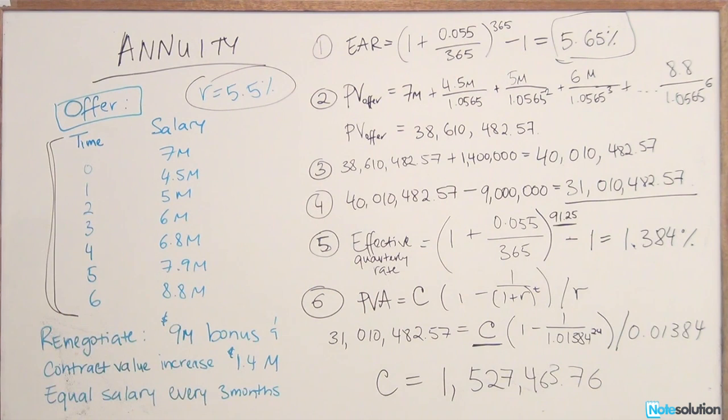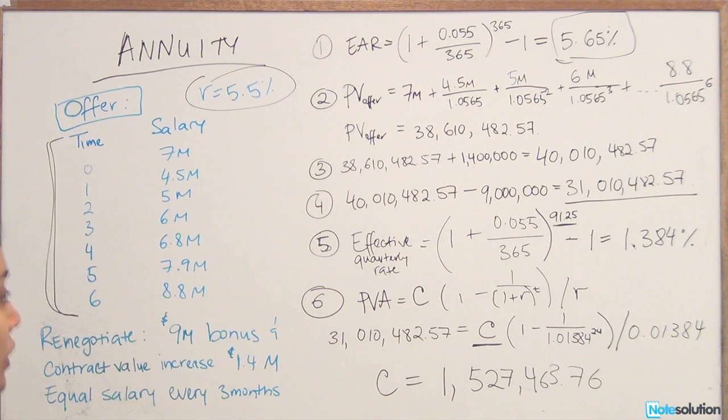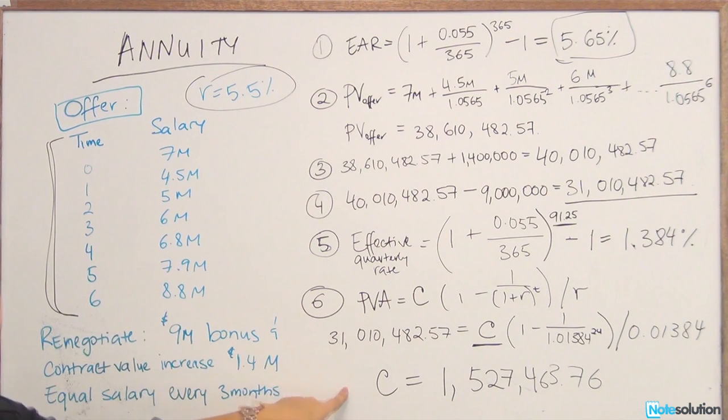So really, he wants you to renegotiate the contract so that he would get paid $1.5 million every quarter. So it might seem like a long and difficult question at first, but you just need to be very methodical in terms of solving it, and just follow the steps, and you'll arrive at the correct solution.